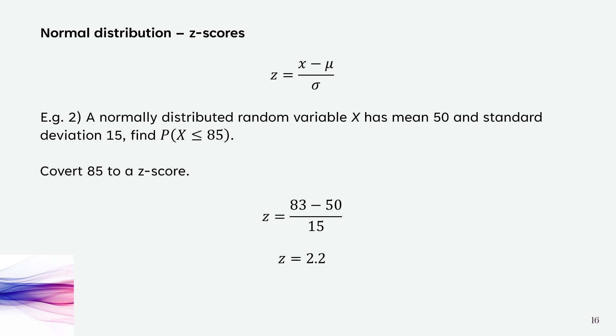From our previous video, because 2.2 is not an exact value, we can't use the empirical rule. So we're going to have to use our table from the previous video.